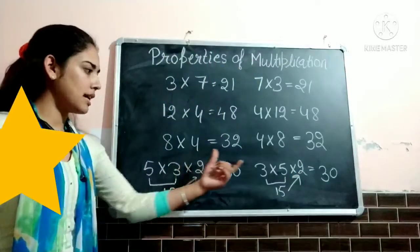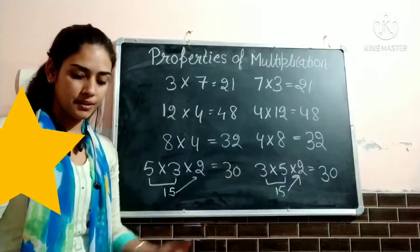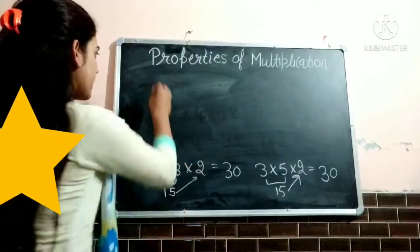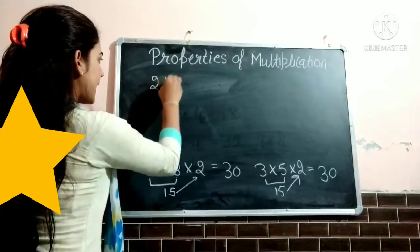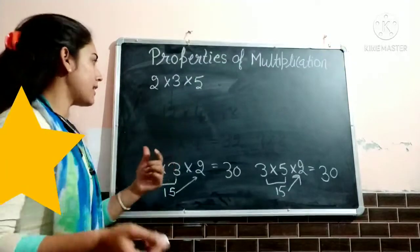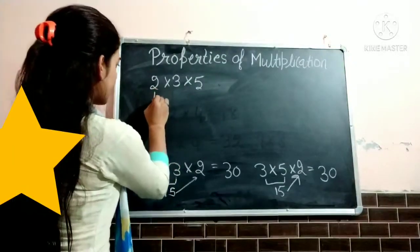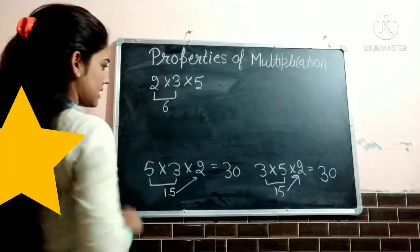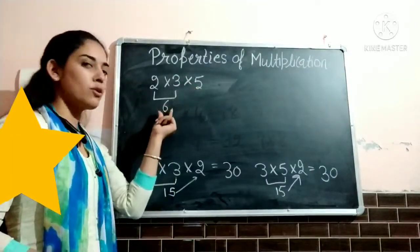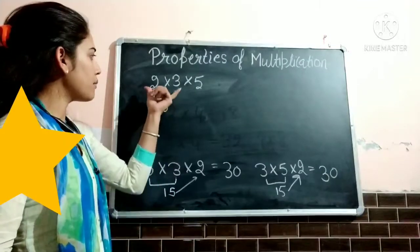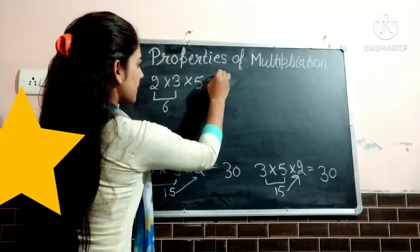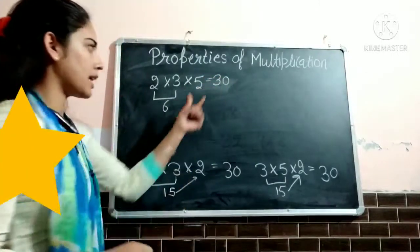Now let us change one more order. This number is 5 multiply 3, multiply 2 — so let us write 2 firstly: 2 multiply 3, multiply 5. We changed the order again. Now let us multiply first two numbers: 2 threes are 6. Now we will multiply the third number by the product of the previous two numbers — the product is 6, so 6 fives are 30. Again product is same.